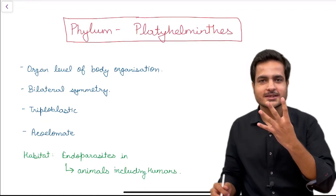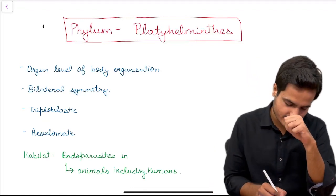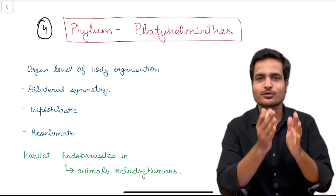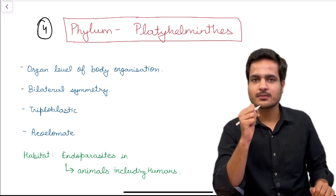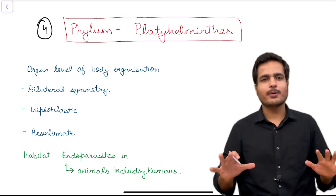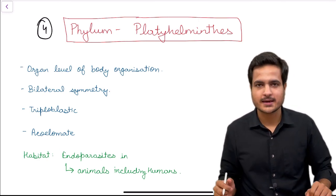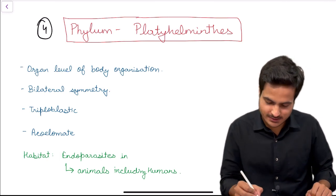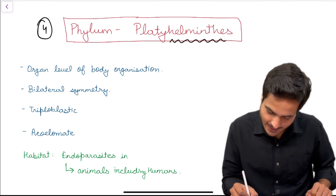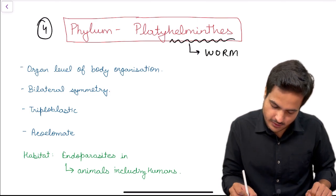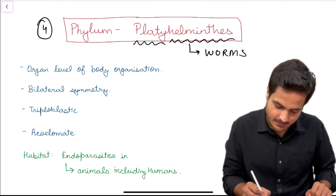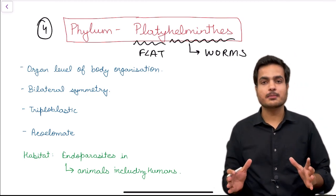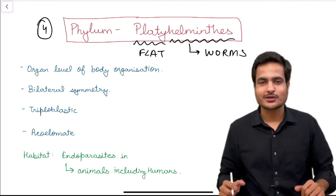In this video we'll be discussing the fourth phylum of our discussion, that is Phylum Platyhelminthes. This fourth, fifth, and sixth phylum in a row are all about worms or worm-like animals. The word 'helminth' means worms, and 'platy' means flat — therefore in this discussion we'll be talking about flat worms.